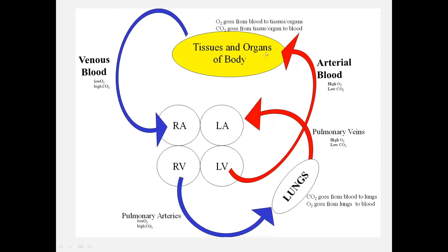And it happens over and over again. Placing the valves on the diagram: between the right atrium and right ventricle is the tricuspid valve; between the left atrium and left ventricle is the bicuspid or mitral valve; between the left ventricle and the aorta is the aortic valve; and coming out of the right ventricle is the pulmonary valve. So you have your four chambers, four valves, and great vessels — and this is the way blood flows through the heart, to the lungs, out to the body and back.